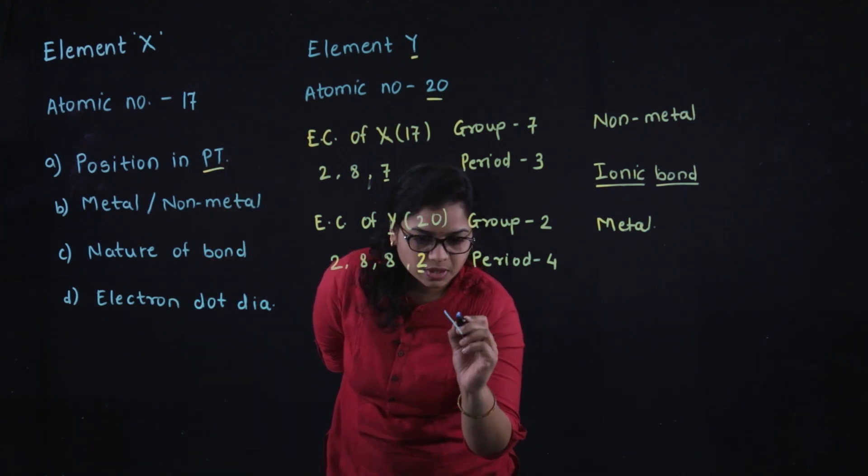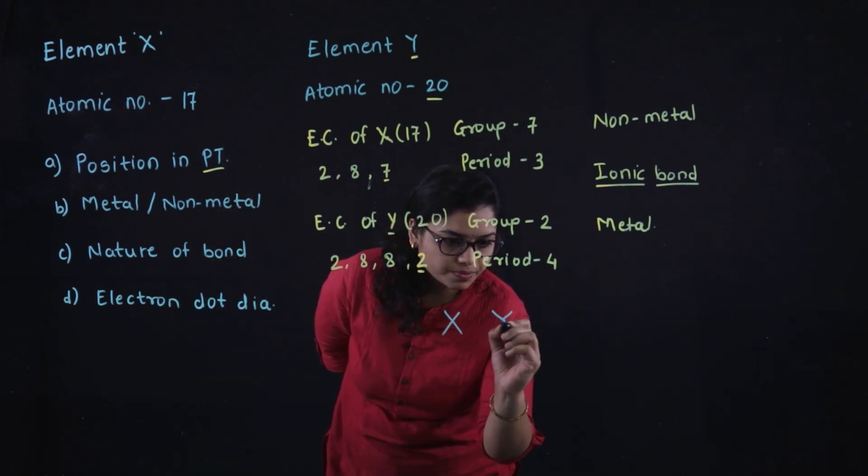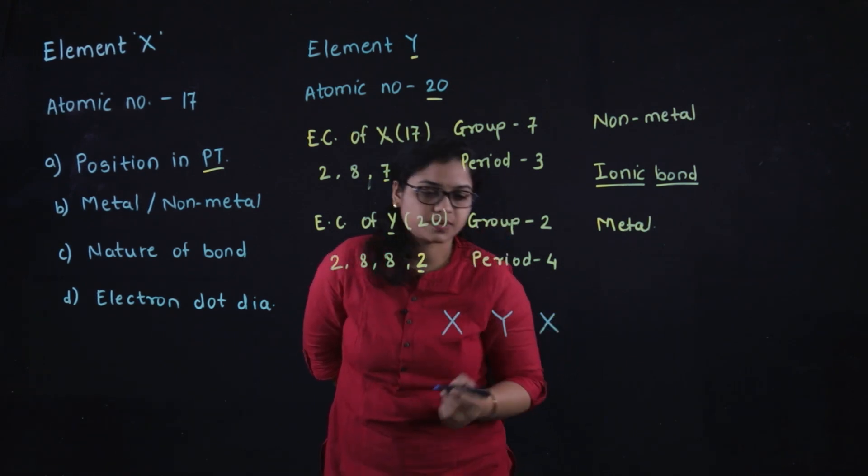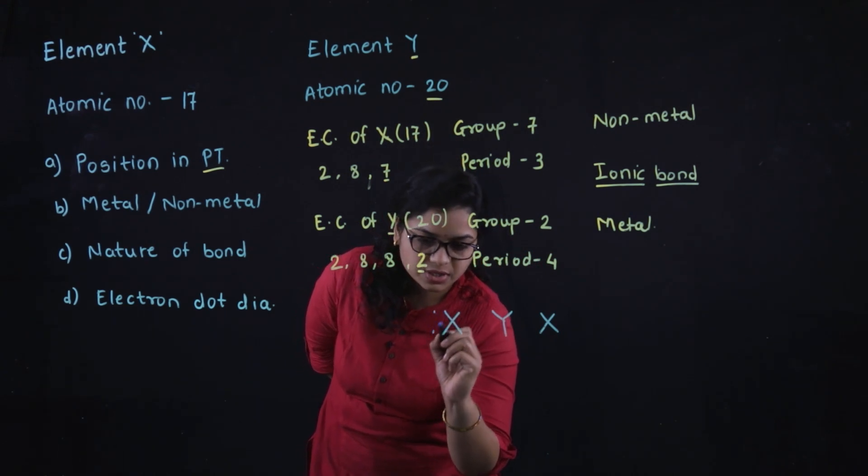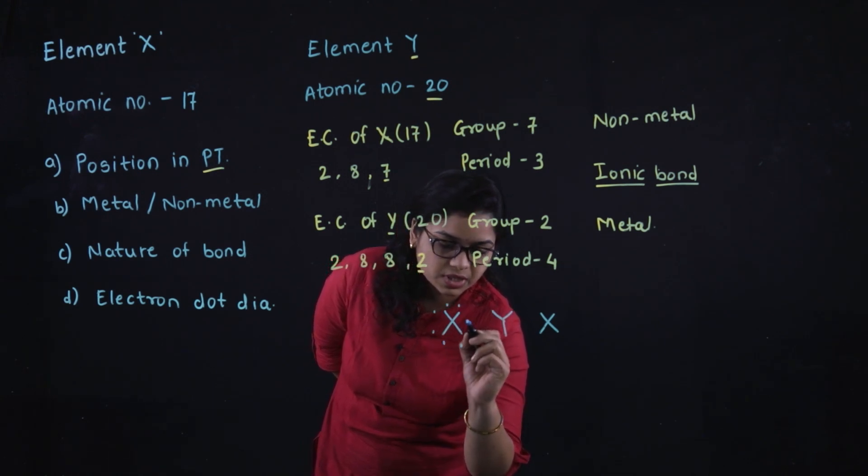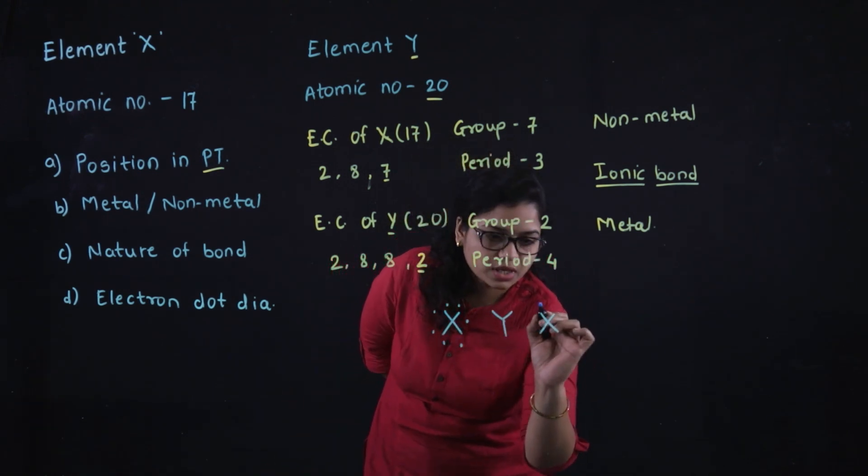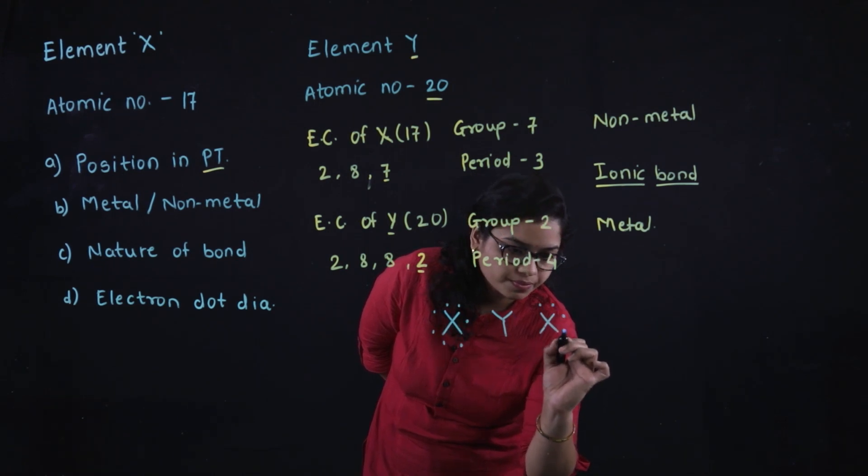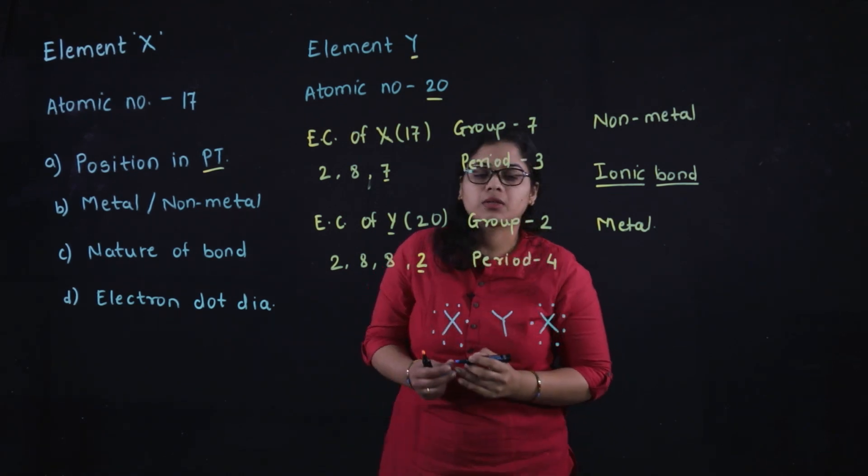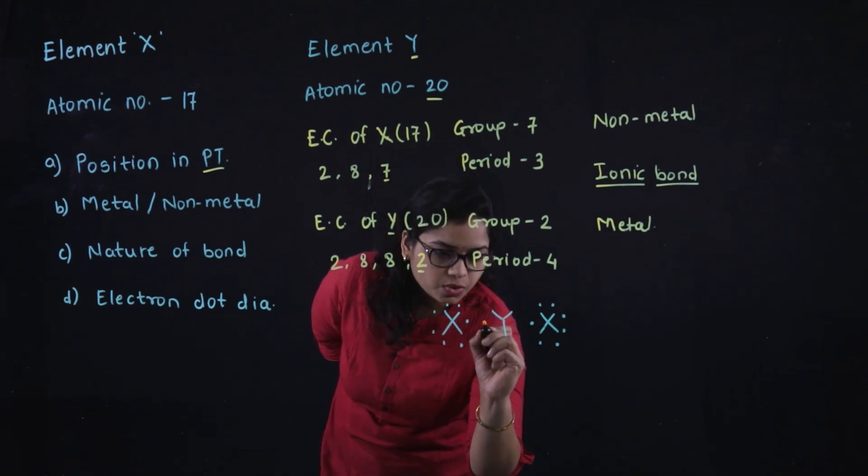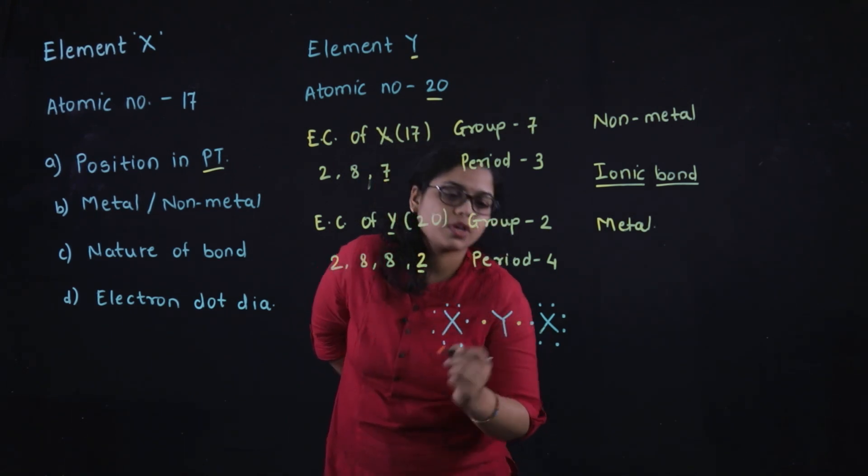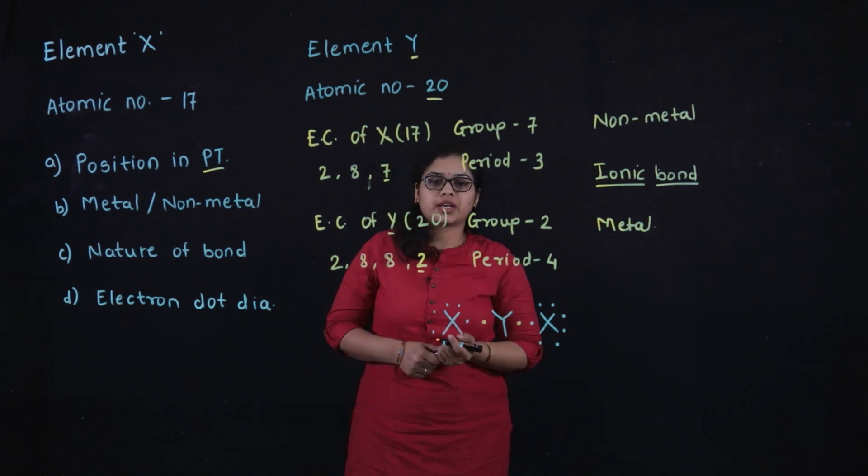Next is the electron dot diagram. X, Y, X - the valence of X is 7, so here are 7 electrons, also here 7 electrons. The valence of Y is 2, so 2 electrons of Y. This is the electron dot diagram formed between X and Y.